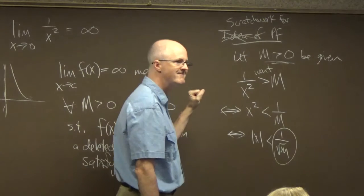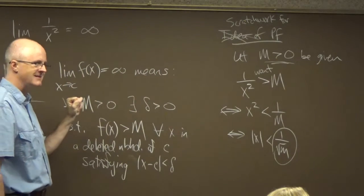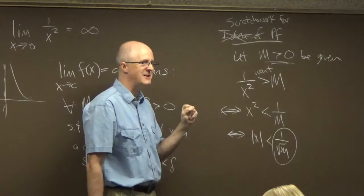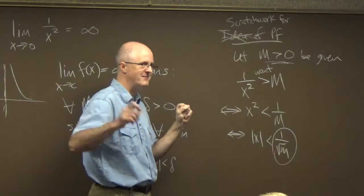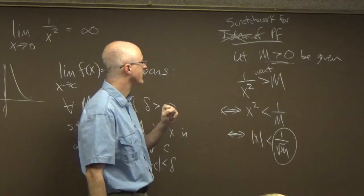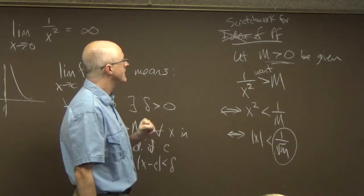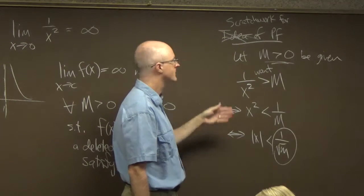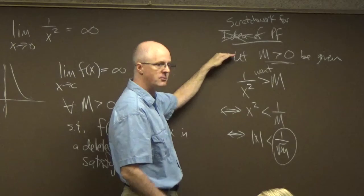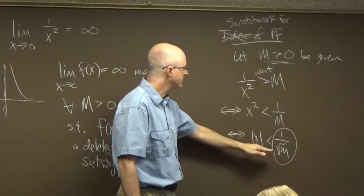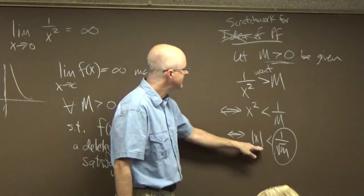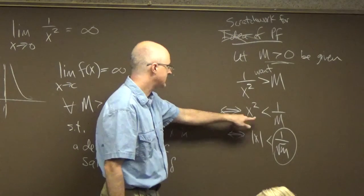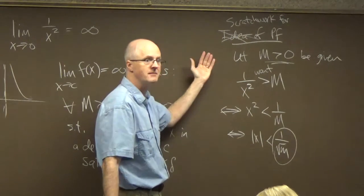So the proof would go: let M greater than 0 be given. Choose delta to be 1 over the square root of M. Suppose x is within delta of 0, meaning the absolute value of x is less than delta. Then work backwards through the equivalences to get that f of x is bigger than M. You'd say let M greater than 0 be given, let delta be 1 over the square root of M, suppose x is within delta of 0 — that would mean x² less than 1/M, that would mean 1/x² greater than M. You're done.